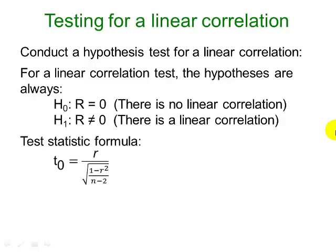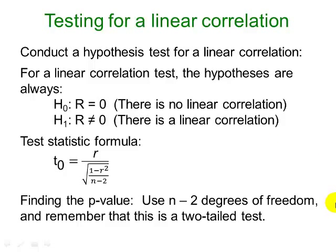Our test statistic formula for this hypothesis test is T-sub-zero, and notice that the T here means we're using the T distribution. The R in the formula is the correlation coefficient: R over the square root of 1 minus R-squared over N minus 2, where N is the number of data points, our sample size. To find the p-value, we use the T distribution with N minus 2 degrees of freedom. Because our alternative hypothesis is always not equal to, this is always going to be a two-tailed test.